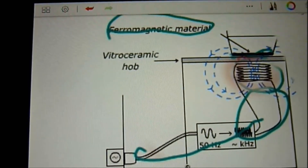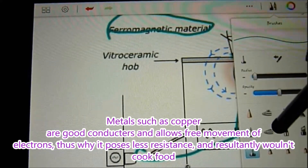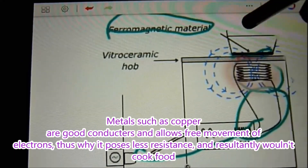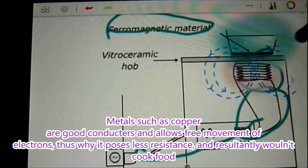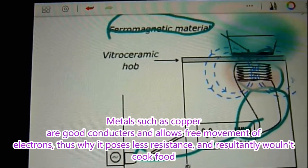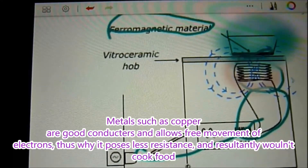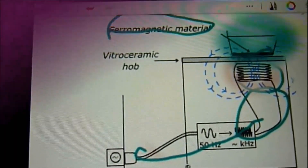Metals such as copper are good conductors and allow free movement of electrons. This means copper poses less resistance than iron and would not cook food effectively on an induction stove.